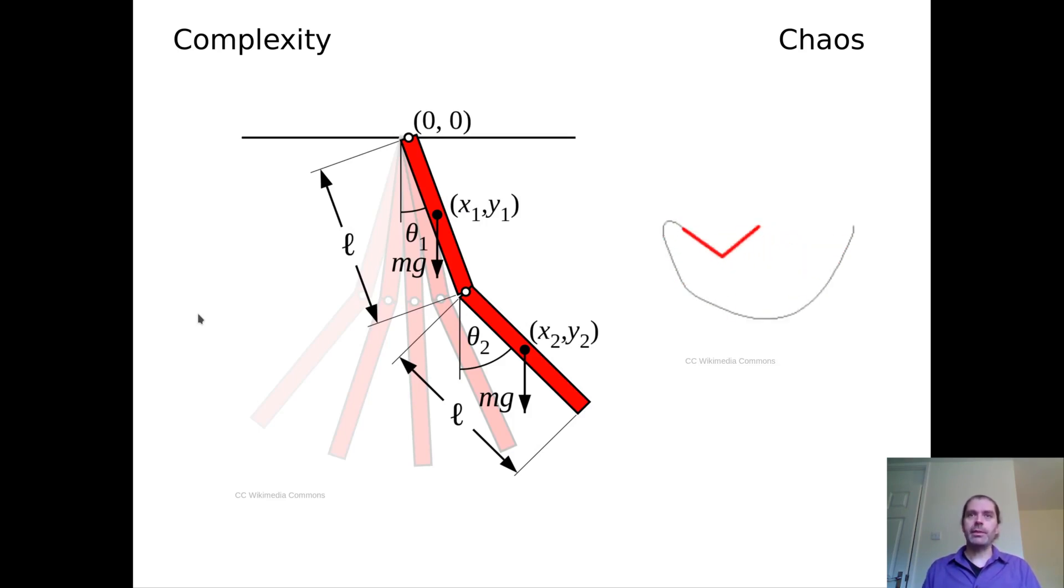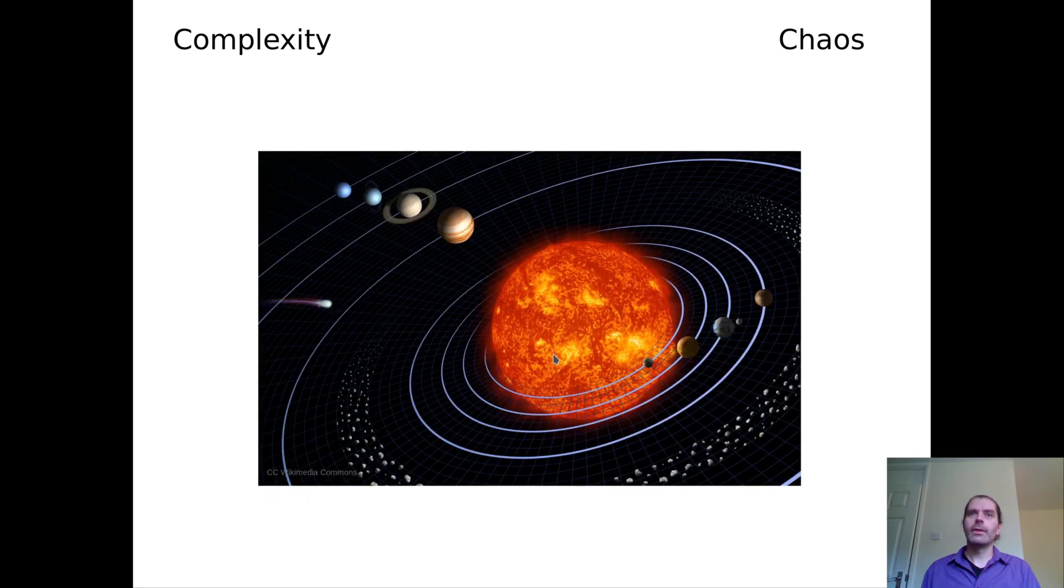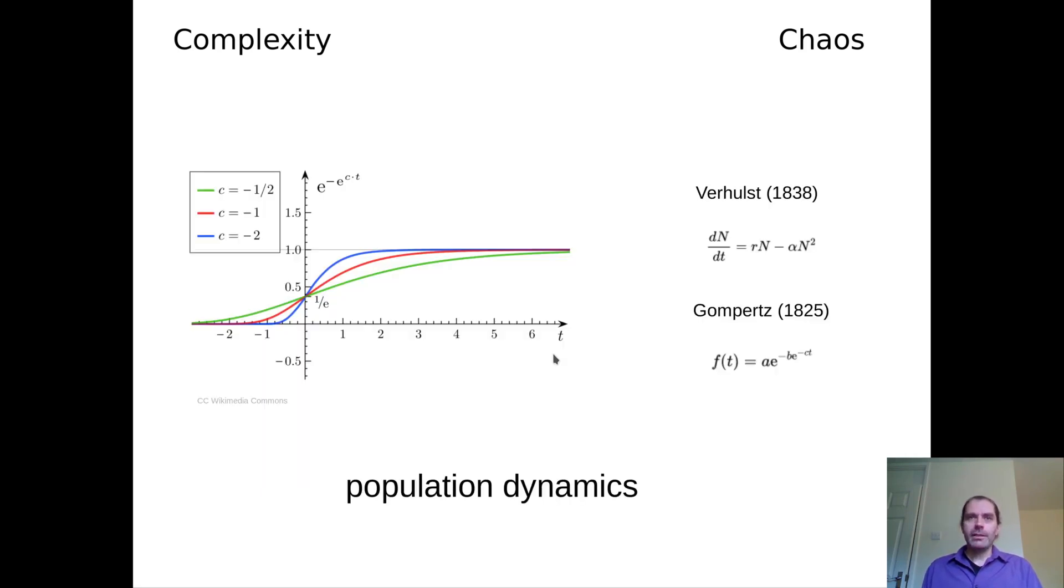Simple mechanical systems can be chaotic. If we build a pendulum out of two connected rods, then we can see chaotic behavior. And even the paradigmatic example of predictability, the movement of planets around the sun, turns out to be chaotic, actually. So we can predict the movement in the time span of 100 or 1000 or even a million years. But after a few million years, we enter the realm of chaos, and we are unable to predict anything beyond that point.